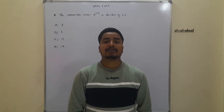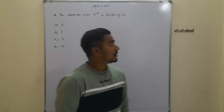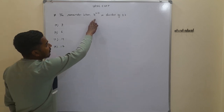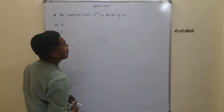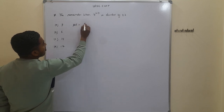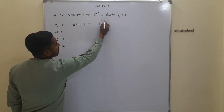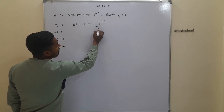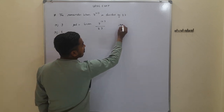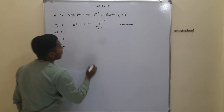Hello everyone. Today we are going to solve a UPSC CSAT question. The question is: find the remainder when 7 to the power 103 is divided by 23. Let's solve the problem.